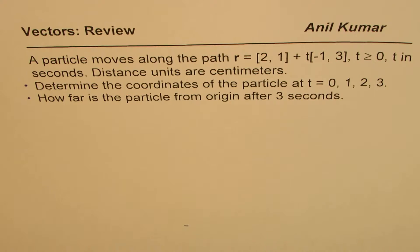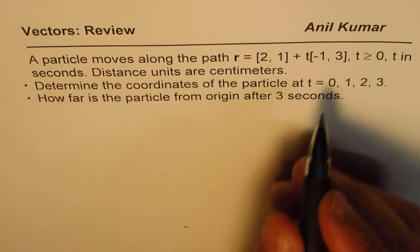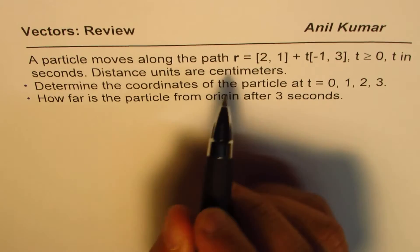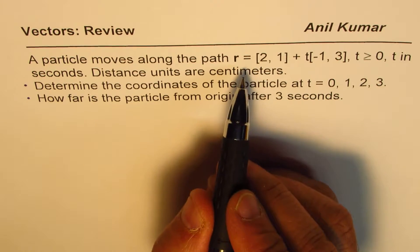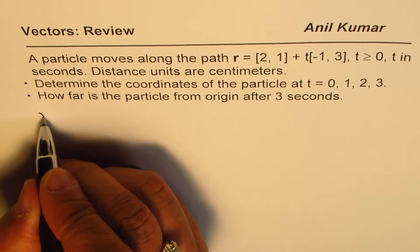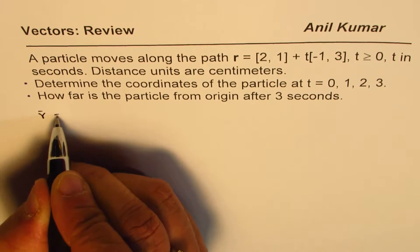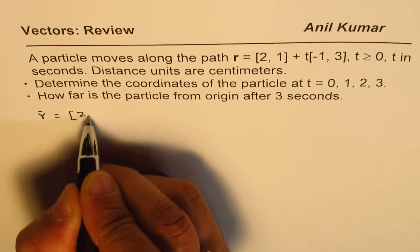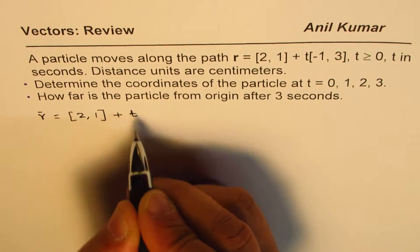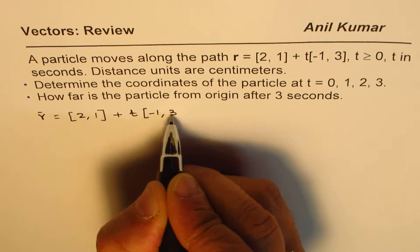So there are many ways to do it. However, I find a very effective way of making a table and then answering such equations. So we will begin with writing the equation of the movement of particle, which is vector r equals [2,1], that's the kind of initial point, plus t[-1,3].